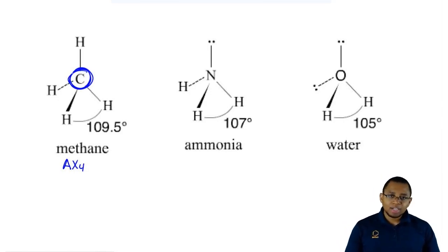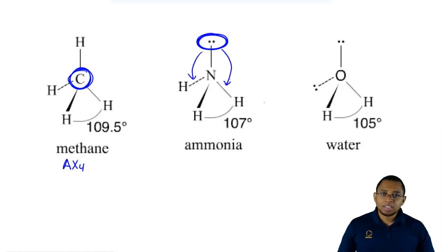But if we move over to ammonia NH3, we have our first lone pair involved. Lone pairs want to be as far away as everyone else. This is going to push the other bonds away from it. This causes them to compress or get smaller and that actually makes the bond angle smaller.